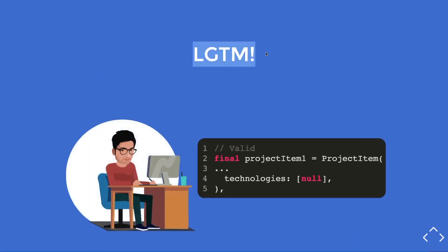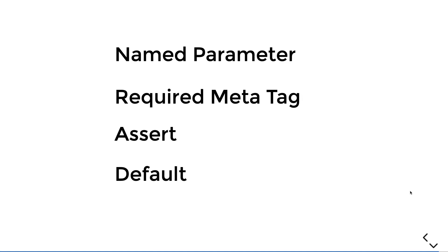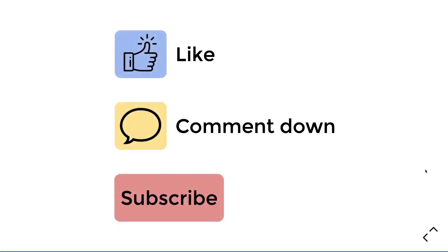With all of this implemented, the senior developer finally says 'looks good to me.' In summary, we've learned: named parameters, the required meta tag, assertions with readable error messages, and default values. That's how you create Dart classes like a pro. If you liked this video, give it a thumbs up, subscribe, and comment what concept you'd like me to cover next.